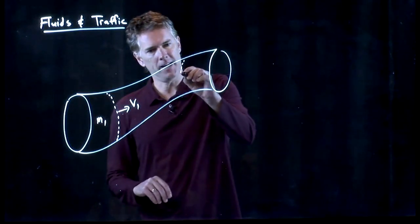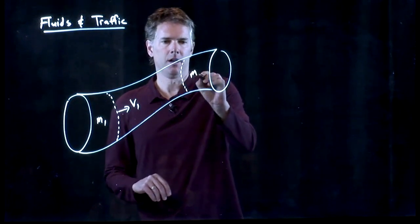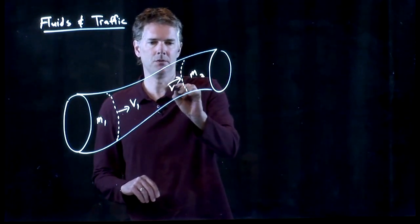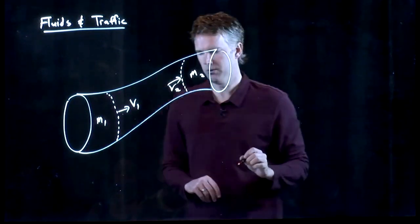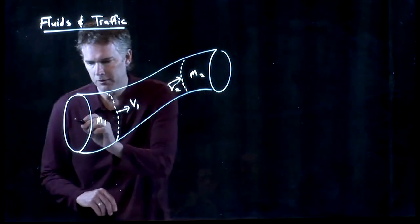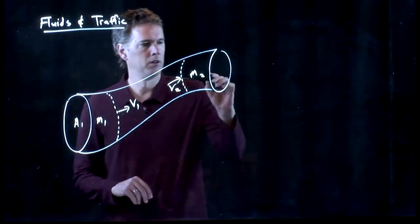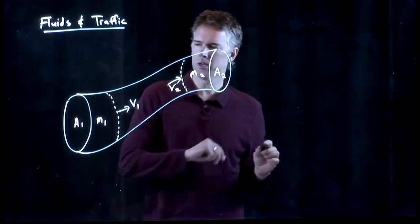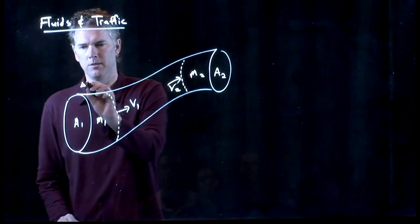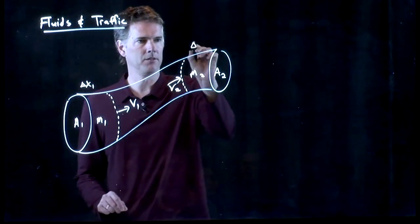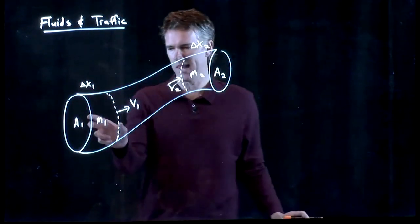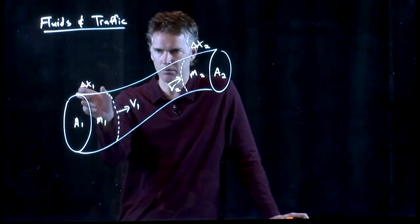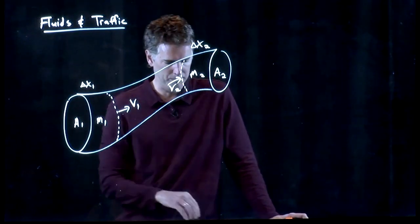But it's got to come out the other side of the pipe, and so mass M2 will have speed V2. We can also say that the pipe has cross-sectional area A1 at this end, A2 at that end. That slab of water occupies delta X1 down here, delta X2 up there.